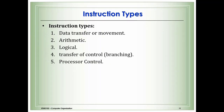Instruction types include: data transfer or movement (moving data between memory locations or registers); arithmetic (division, multiplication, subtraction); logical (AND, OR, and other logical operations); shifting and rotating; and transfer of control or branching — where the computer begins executing a different instruction sequence and may return back. We also have processor control instructions like halt, disable, and enable interrupts.